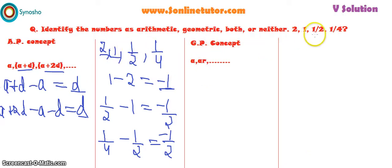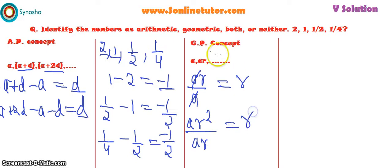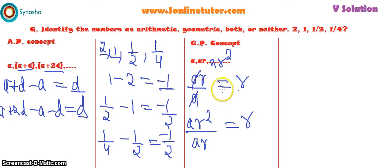To find out if a given series is in geometric progression, we check that AR divided by A always gives you R. Similarly, AR squared divided by AR again gives you R. So in geometric progression, if you divide two sequential numbers, it gives you the same ratio every time.